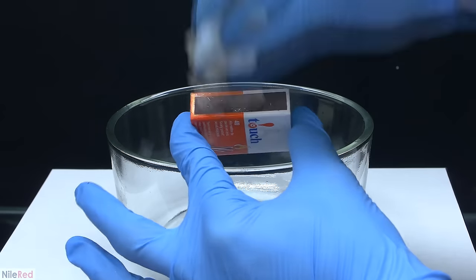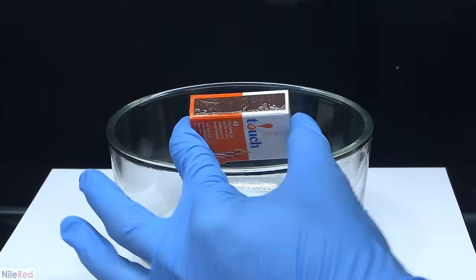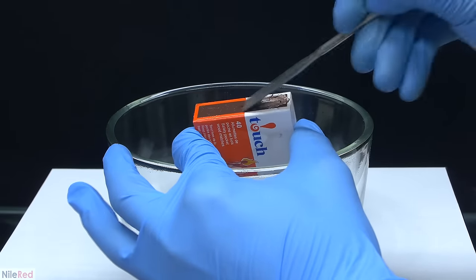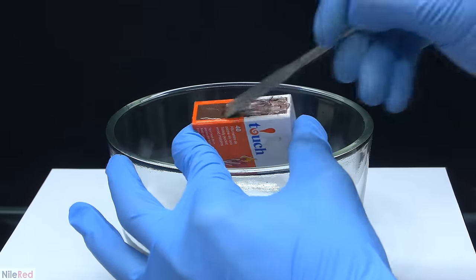After trying out a few different methods and solvents, I found that the easiest way was to just dab the matchbox with a wet paper towel and then scrape off the red phosphorus using a spatula.